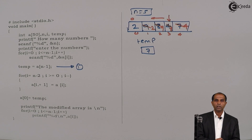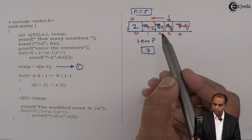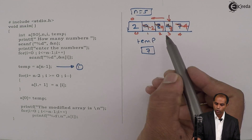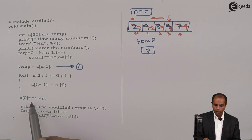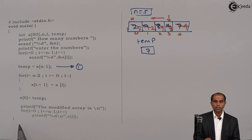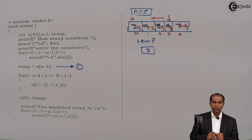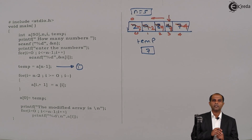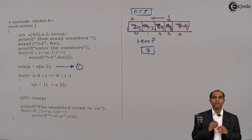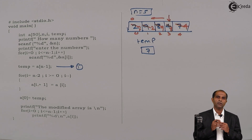Finally, whatever value is in temp should be copied onto A of 0. So temp always goes to A of 0. I have now done the operation of shifting elements right hand side by one position — moved in an anti-clockwise direction. This is how we carry out the cyclic rotation or shifting of elements.